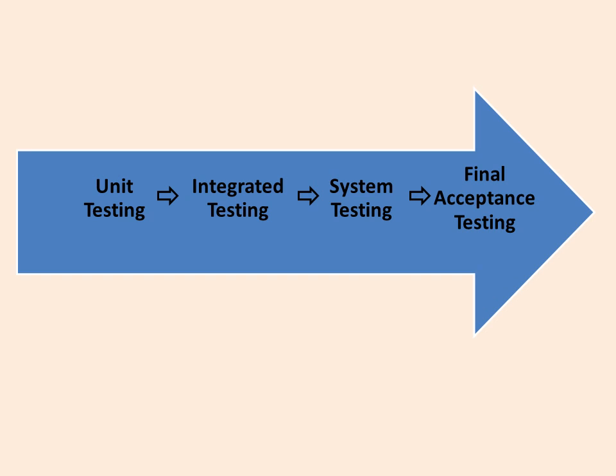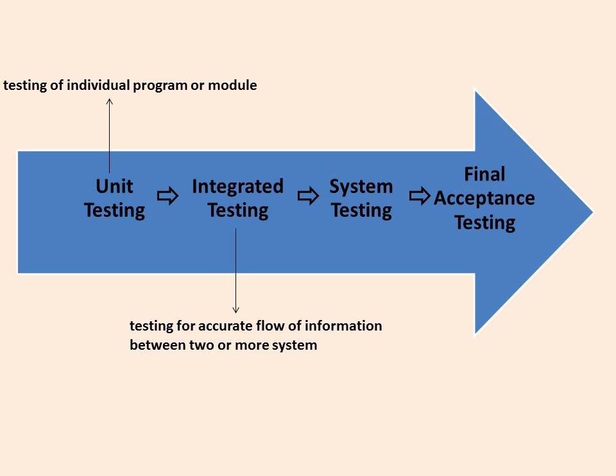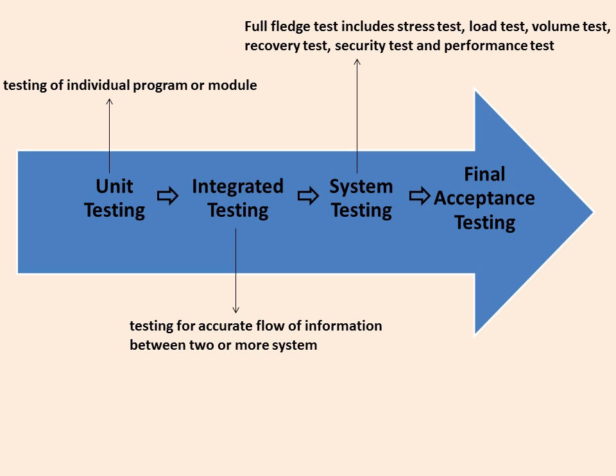These are some important tests during the development stage. Unit Testing is a testing of individual program or module. Integration Testing is testing for accurate flow of information for 2 or more systems. System testing includes stress test, load test, volume test, recovery test, security test, and performance test — it is basically a full-fledged test. Then we have acceptance testing, which includes QAT and UAT.